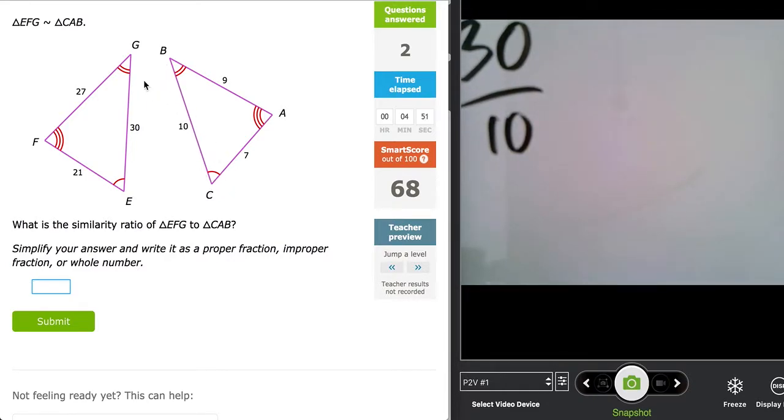Another way again to think about this would be I'm looking at letters EG. So EG are the first and the last. EG corresponds to CB because those are the first and the last. That's why I have to take the number that's next to CB.